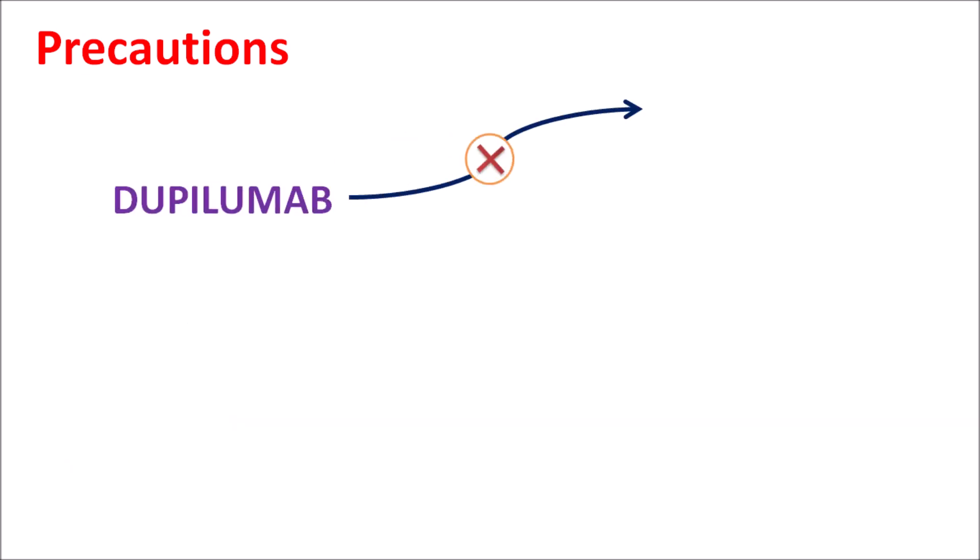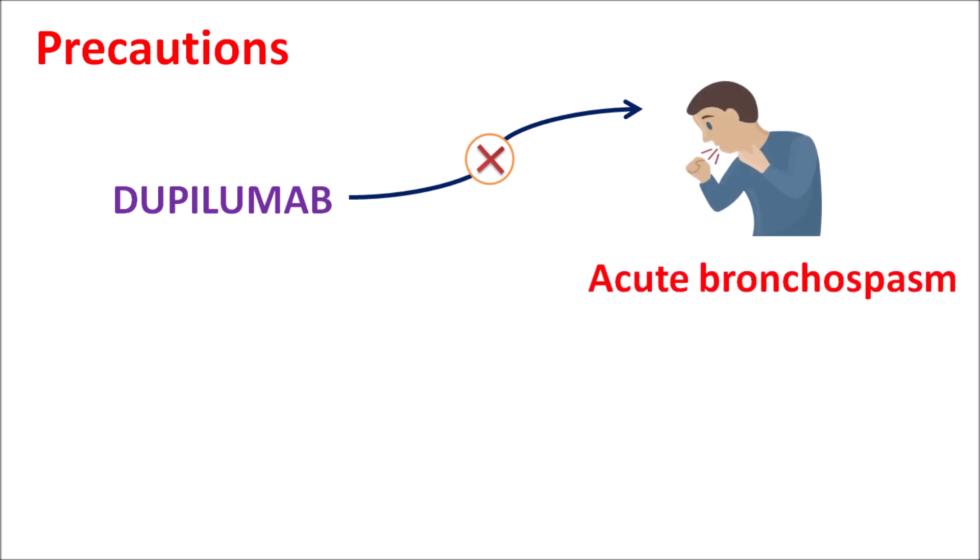Dupilumab should not be given for treatment of acute symptoms of bronchospasm or asthma. Acute exacerbations should not be treated by dupilumab. This drug is only indicated in the treatment of moderate to severe asthma along with other agents to control the number of attacks. The patient should not withdraw any anti-asthmatic medications while using dupilumab, as it may further increase acute bronchospasm. This drug is not intended for acute symptoms of asthma and bronchospasm.